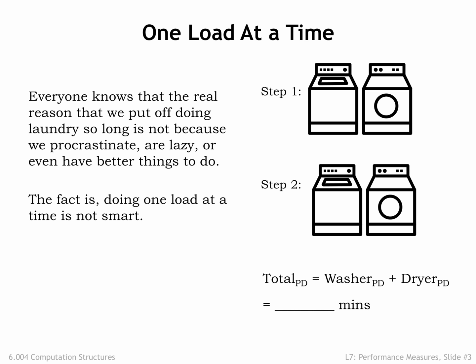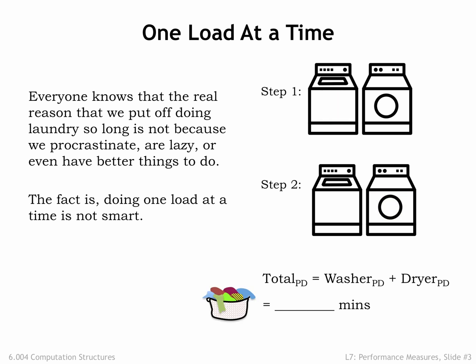To process a single load of laundry, we first run it through the washer, which takes 30 minutes. Then we run it through the dryer, which takes 60 minutes. So the total amount of time from system input to system output is 90 minutes. If this were a combinational logic circuit, we'd say the circuit's propagation delay is 90 minutes from valid inputs to valid outputs. That's the performance analysis for a single load of laundry.